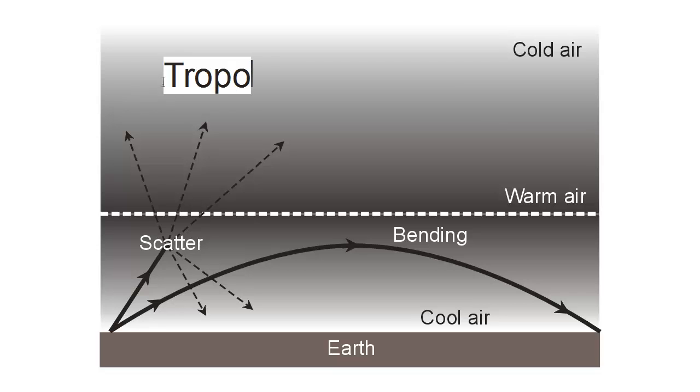Now remember, the troposphere is where all of our weather occurs and it extends up from the surface to roughly 8 miles near the poles and 12 miles near the equator. A good average figure is 10 miles or 16 kilometers. That is the depth of our ocean of air where all of the weather phenomena take place.